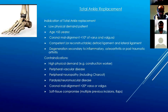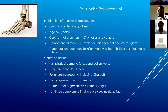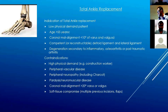Further indications for total ankle replacement: coronal malalignment less than 10 degrees of varus or valgus, and competent lateral and medial ligaments — if they're not competent, the replacement will definitely fail. Some surgeons will reconstruct the deltoid ligament and still perform the replacement. Indications also include degenerative, secondary inflammatory, and post-traumatic arthritis, though these are more difficult because the anatomy is destroyed and soft tissues are unbalanced — for these, arthrodesis may be a better option.